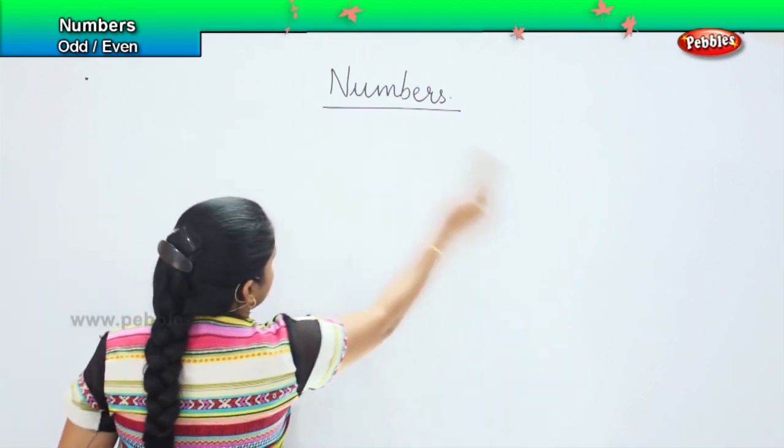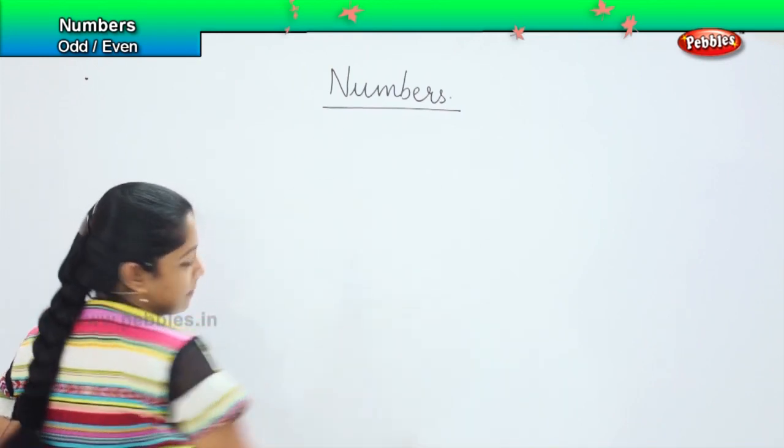If a number is given big, how will you identify whether the given number is odd or even?